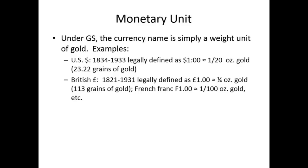What is the monetary unit under the gold standard? In the U.S., from 1834 to 1933 — about 100 years — the dollar was legally defined as one-twentieth of an ounce of gold, more precisely 23.22 grains of gold. The British pound, from when they went back onto the gold standard after the Napoleonic Wars in 1821 until 1931, was legally defined as one-quarter of an ounce of gold, approximately, or 113 grains. The French franc was defined as one-hundredth of an ounce of gold.